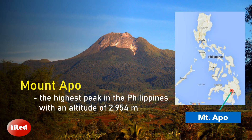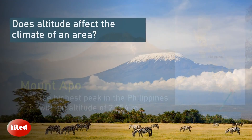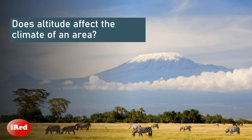Mount Apo is a dormant strato volcano on the island of Mindanao. Now our key question is: does altitude affect the climate of an area?